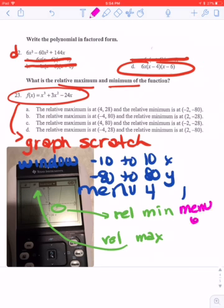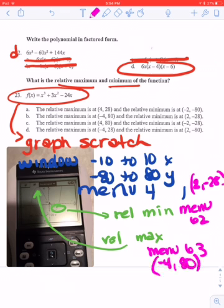you have to use menu 6, 2. And do the relative max. You're going to have to use menu 6, 3. And if I do that, my relative min is going to be 2, negative 28. And my relative max is going to be negative 4, and 80. Okay, that means on 23, my answer is going to be B.